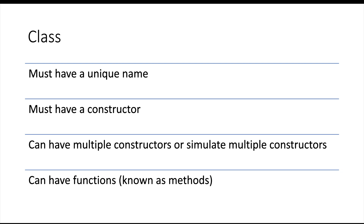Classes can also have multiple constructors, or in cases where they can't, we can usually simulate multiple constructors. In C# we can have multiple constructors, but in Python we can't — though we can simulate them. We can also have functions, which in the context of classes or objects are actually known as methods. Methods are the code that defines what happens when we do something or when the class wants to do something.